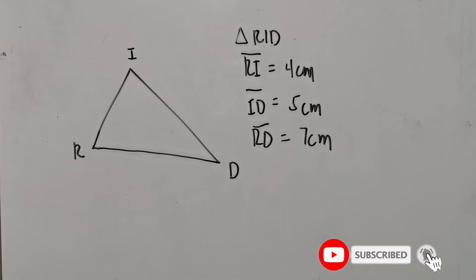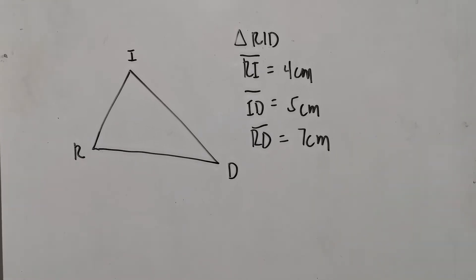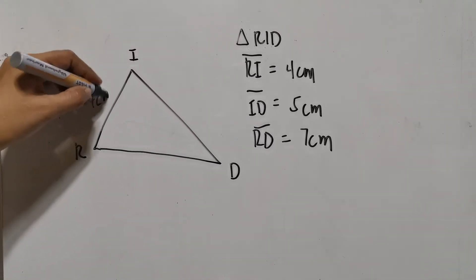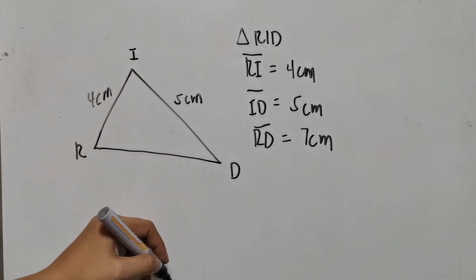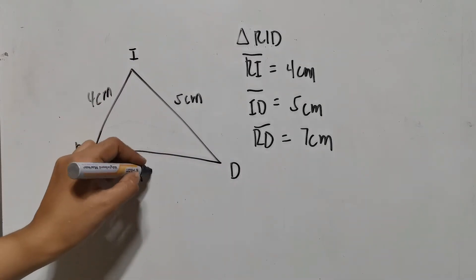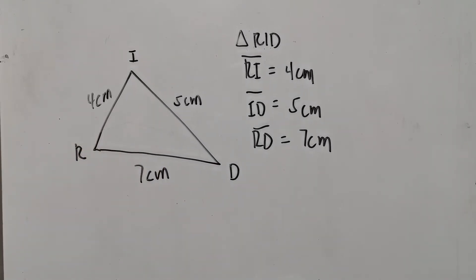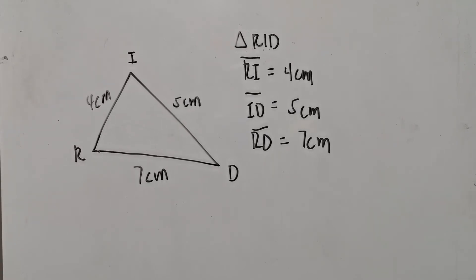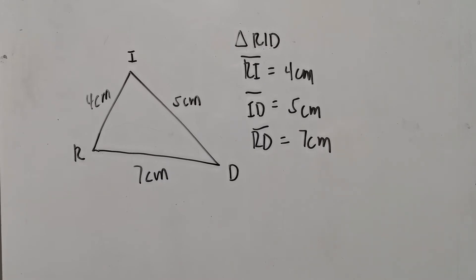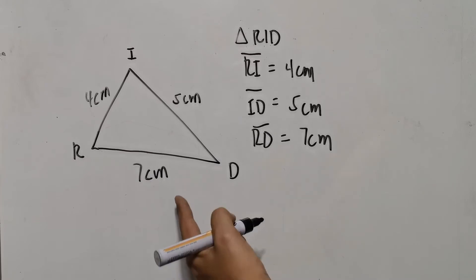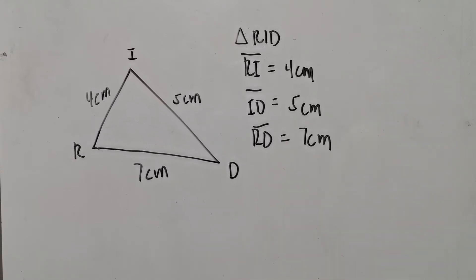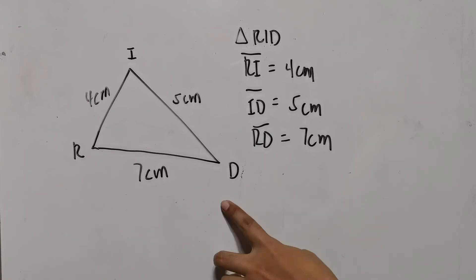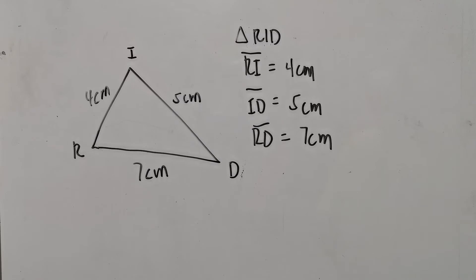So if we have triangle RID, we have RI measuring 4 cm, then we have ID which measures 5 cm, and we have RD which measures 7 cm. According to triangle inequality theorem number 3, the sum of the lengths of any two sides of a triangle is greater than the length of the third side. So once we add two sides and compare that to the third remaining side, it should always be greater than.